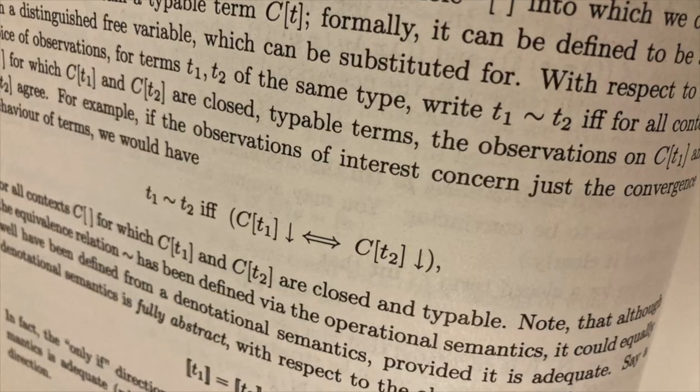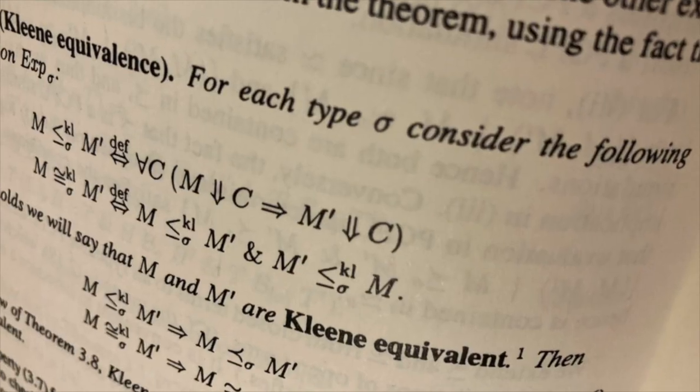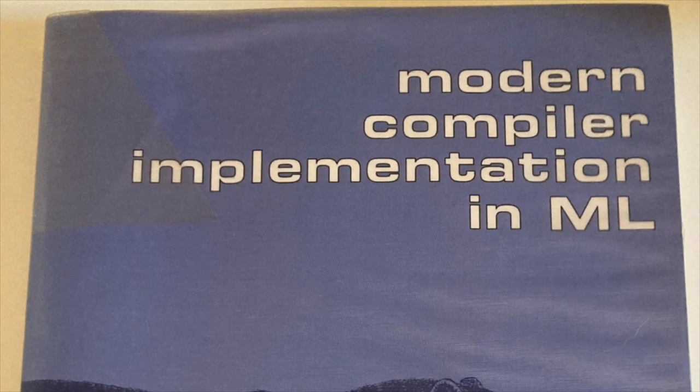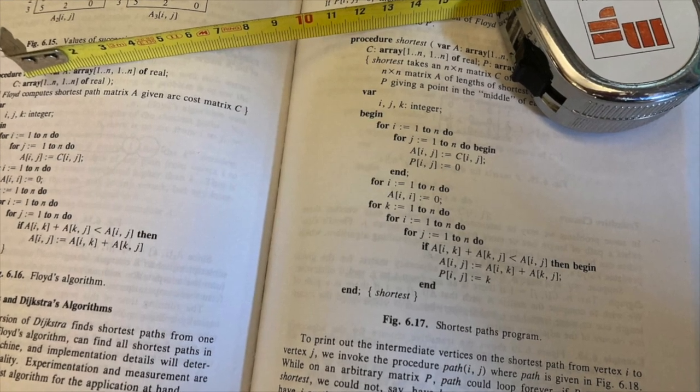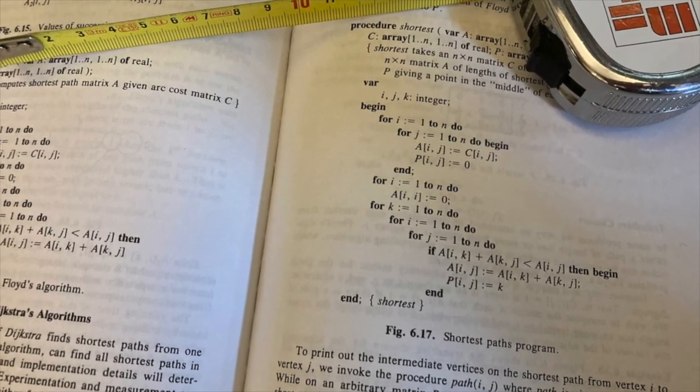Program semantics is centered around equivalences and refinements. Through them, it is possible to justify program transformations and optimizations, and demonstrate that a program satisfies a specification. But what if two programs are not equivalent? Can we say anything about using one in place of the other? In other words, would it be possible to measure the distance between programs? This is precisely what we are going to talk about in this course. See you there.